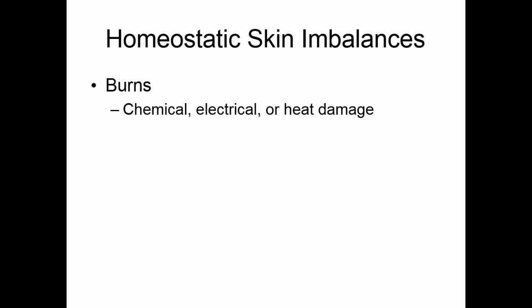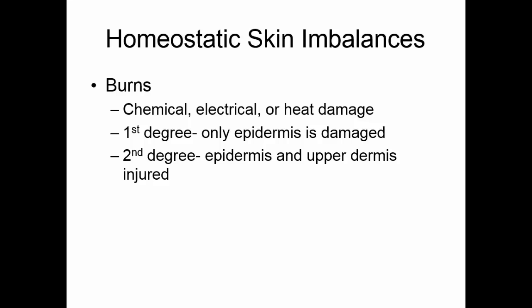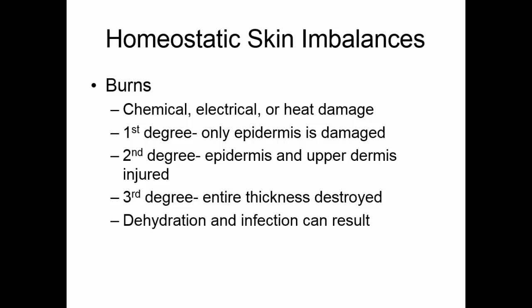One of the homeostatic skin imbalances is burns, caused by chemical, electrical, or heat damage to the skin. In first degree burns, only the epidermis is damaged and the skin appears red. In second degree burns, the epidermis and upper dermis are injured — the epidermis separates from the dermis and fluid collects, causing blistering. In third degree burns, the entire thickness is destroyed. First and second degree burns are painful, but third degree burns are not — all pain receptors in the dermis have been destroyed. Burns are a problem because dehydration can occur when the waterproof layer is lost, and the bacterial barrier is gone, increasing susceptibility to infection.